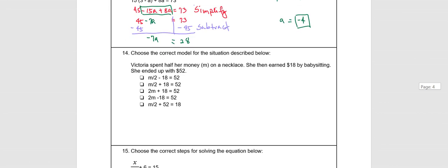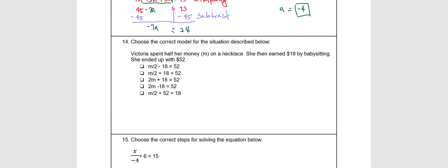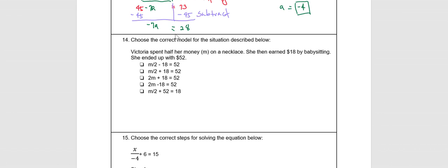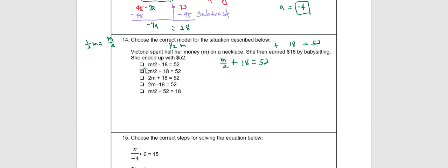In number 14, you need to identify the correct equation or model. Victoria spent half her money — that is one half of m, or one half times m. She then earned plus 18 by babysitting, and ended up with 52 dollars. One half m is the same as m divided by 2. The equation therefore is m divided by 2 plus 18 equals 52, which is the second equation.